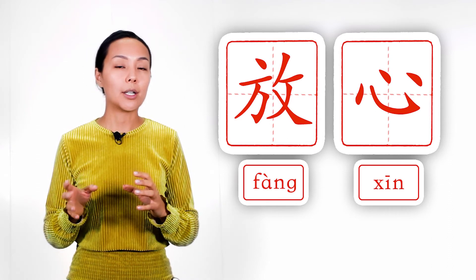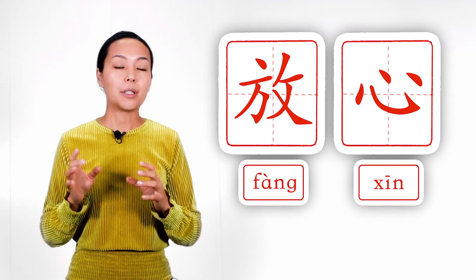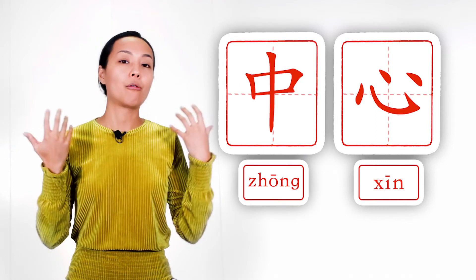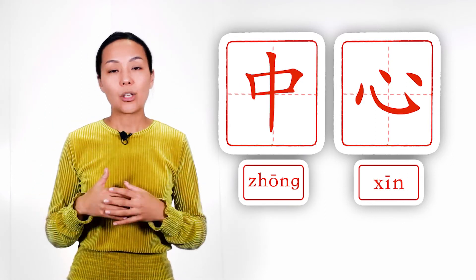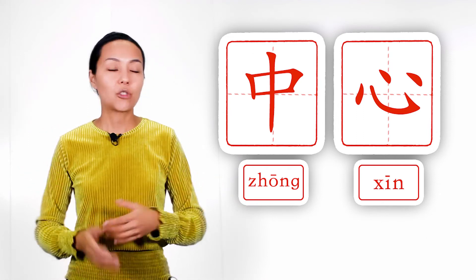And we see heart not only in words connected to feelings, we also, for example, another example is center, zhong xin. In this case, center of anything. Shopping center, education center, or center of fruit, just anything.